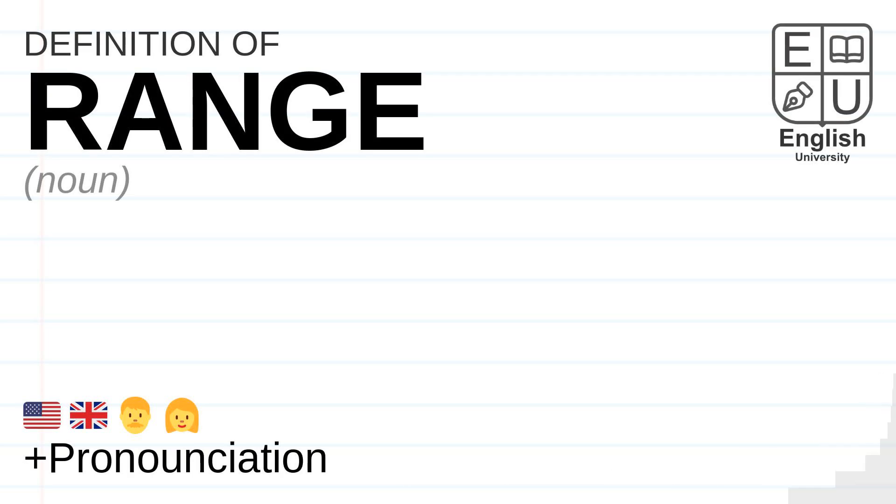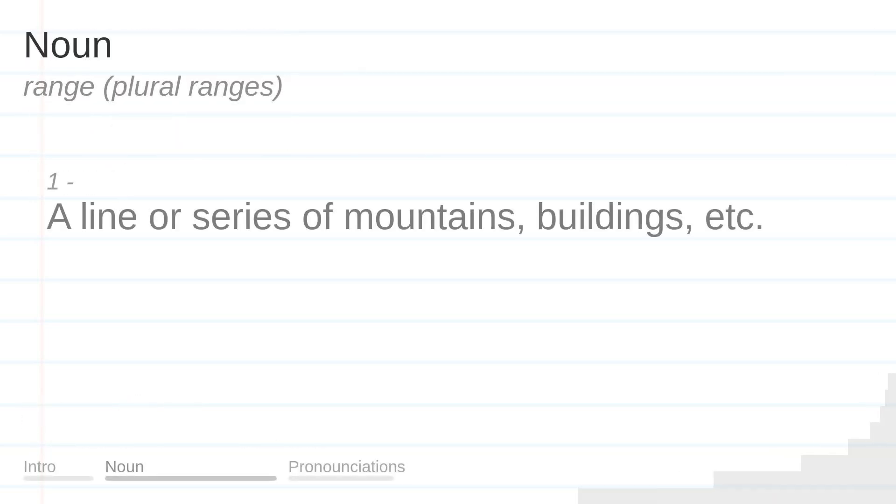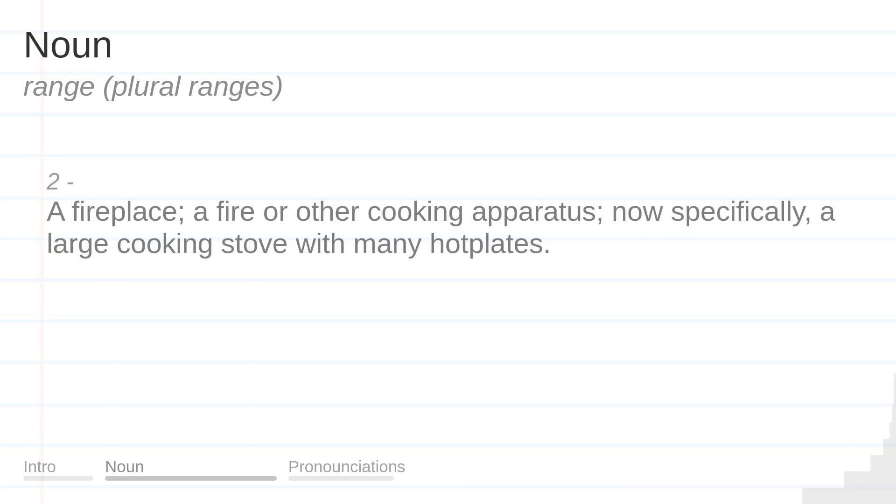Definition of the word range. Noun. A line or series of mountains, buildings, etc. A fireplace. A fire or other cooking apparatus. Now specifically, a large cooking stove with many hot plates.